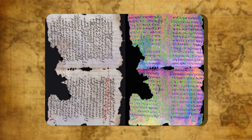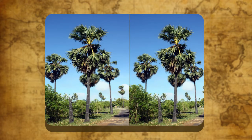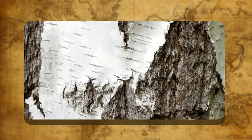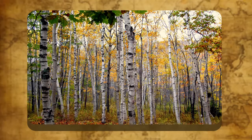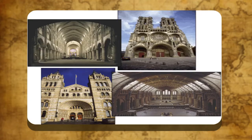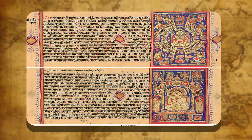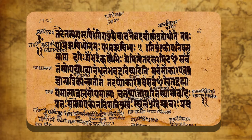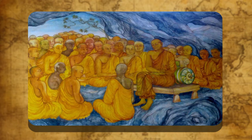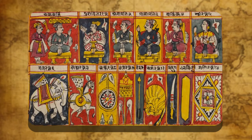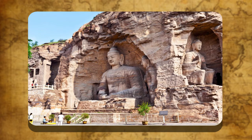Literary Sources: the written records of the past are called manuscripts. These are available on a variety of surfaces such as palm leaves, the bark of the birch tree, and later on paper. The literary source materials may be divided into two classes: religious and secular. Religious literature includes writings on religious themes. These writings, like the Vedas of the Hindus, the Pitakas of the Buddhists and the Angas of the Jains, help us to understand the religious beliefs and traditions of the time.